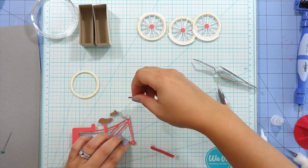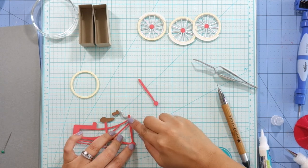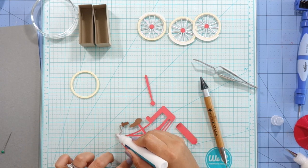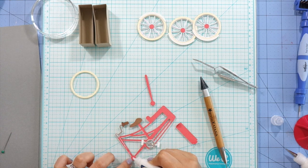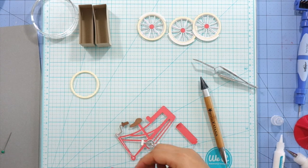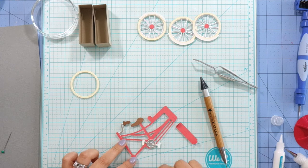Next I'm going to be gluing on those extra fork pieces. It just covers up that little piece of the handlebar on top and just gives it a cleaner look. And I'm going to glue on the other side as well.